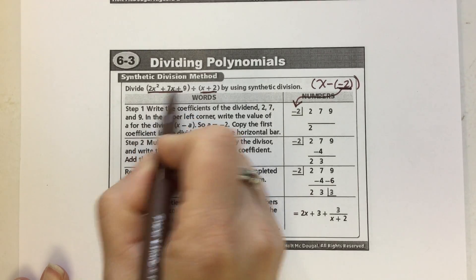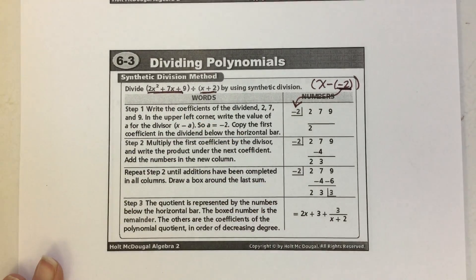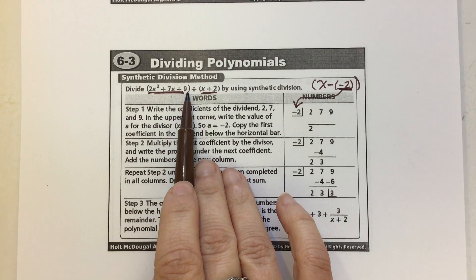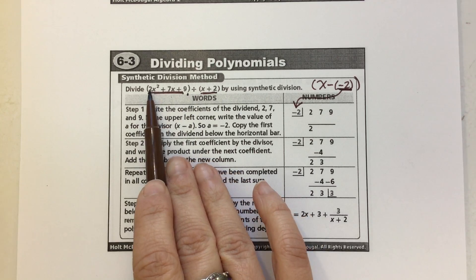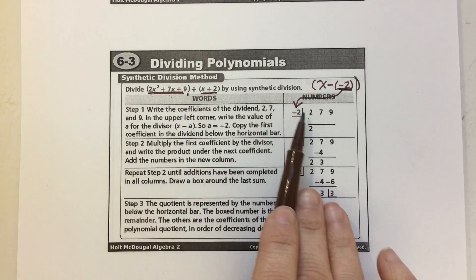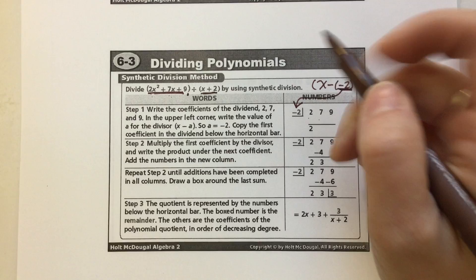Then you take just the coefficients of the first polynomial. You need to make sure they are in standard form and you do not skip any values of the variable. Here I have 2x², 1x, no x's — so I don't have to add in any zeros. It's in the right order: I have a 2, a 7, and a 9.